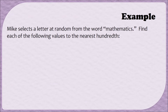Let's do an example of finding some other probabilities. In this example, Mike selects a letter at random from the word mathematics. We're going to find each of the following values to the nearest hundredth. For part A, we've been asked to find P(M). I want to talk about this notation for a moment because we're going to be seeing it often throughout this module and the next.